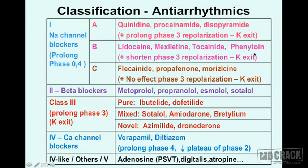Class 1C is again a sodium channel blocker that prolongs phases 0 and 4, but has no effect on phase 3 — no effect on potassium exit or repolarization. The class 1C drugs are flecainide, propafenone, and moricizine. So class 1A prolongs phase 3, class 1B shortens phase 3, and class 1C has no action on phase 3.